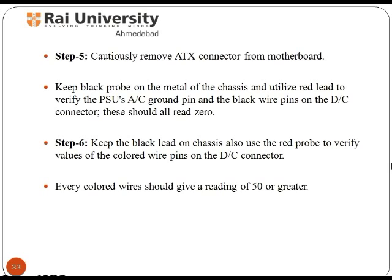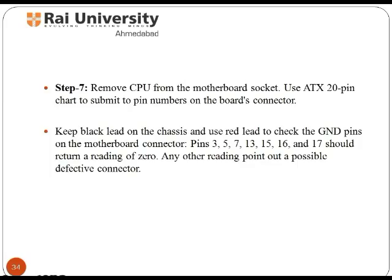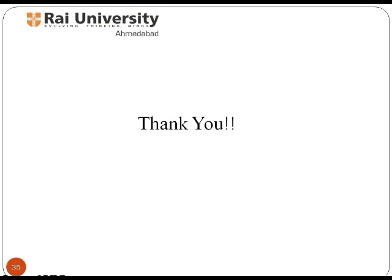Next, keep the black probe in place and use the red probe to verify the values of the colored wire pins on the DC connector. Every colored wire should give a reading of 50 or greater. After performing the above steps, remove the CPU from the motherboard socket and use the ATX 20-pin chart to identify the pin numbers on the board connector. Keep the black probe in place and use the red probe to check the GND pins on the motherboard connector — pins 3, 5, 7, 13, 15, 16, and 17 should return a reading of 0. If any other reading is shown on your multimeter, it means a defective connector is present. In such a way you can adjust the voltage reading and resolve related issues.